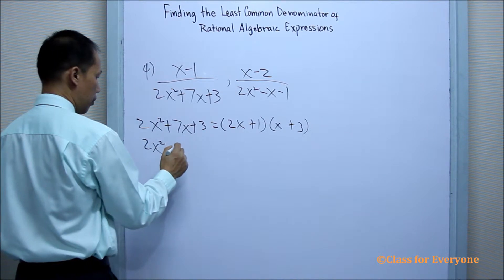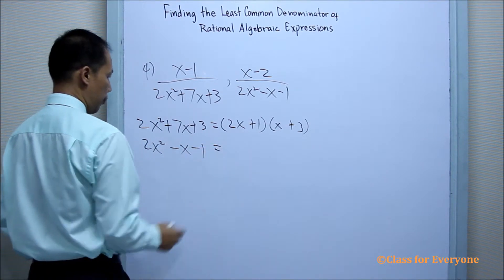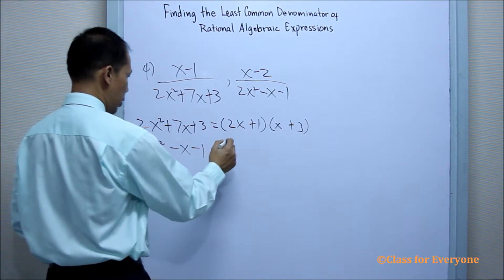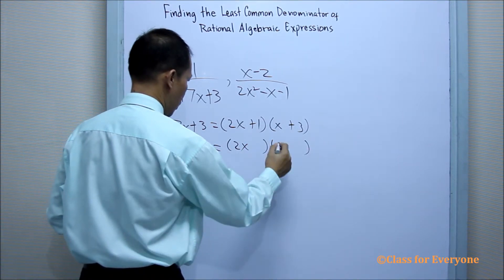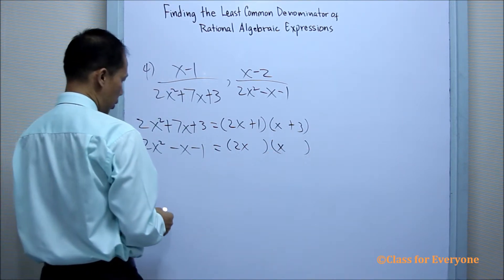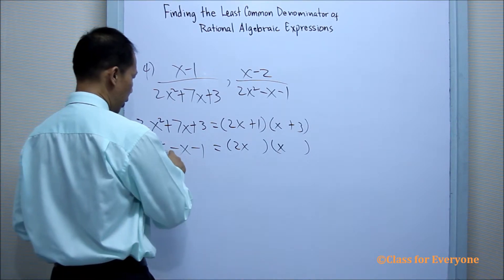2x squared minus x minus 1. So we have 2x, x, and then negative 1.